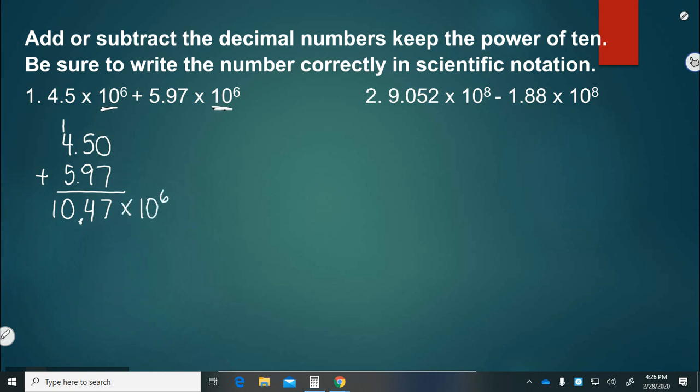But that's not written correctly in scientific notation because the 10 is larger than what is needed in scientific notation. So we move the decimal back once or decrease the place value, giving us 1.047. And since we decrease this place value by 1, we have to increase our power of 10 by 1. So our final answer is 1.047 times 10 to the 7th.